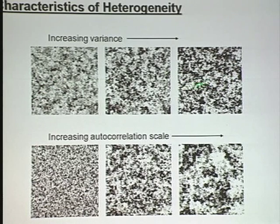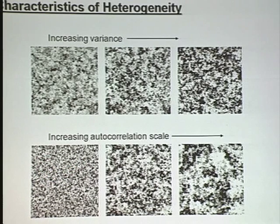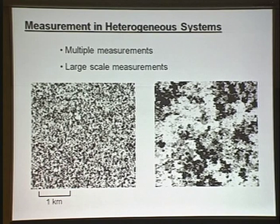The other important aspect in describing heterogeneity — one we don't always think about — is the scale of that heterogeneity, sometimes called the correlation scale or autocorrelation scale. That is the distance over which the values of a parameter are similar to each other. On the left-hand side, values vary on a very small scale; as we move right, it varies more smoothly and the autocorrelation scale increases. Whenever we want to measure something in a heterogeneous system, we can either make lots of measurements or try to make large-scale measurements.